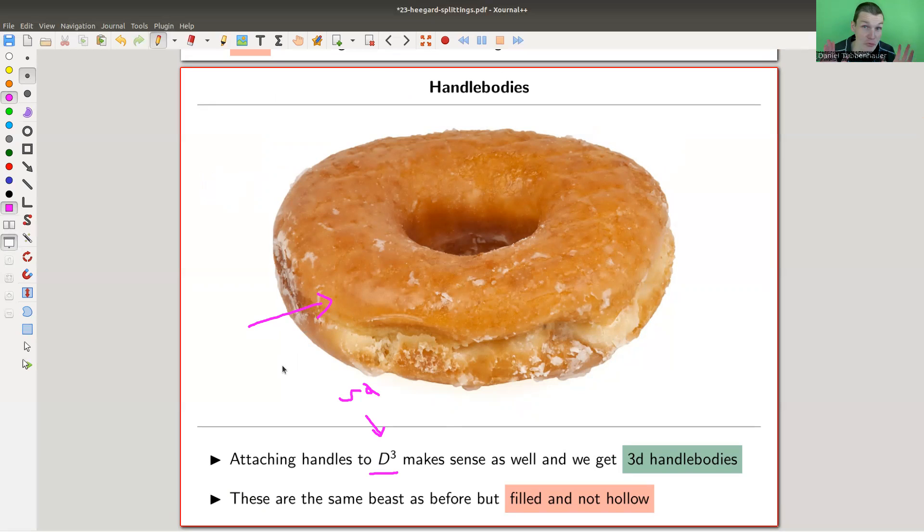So a torus is not a doughnut. A doughnut is not hollow. A torus is hollow. I hope you don't want your doughnuts to be hollow. A doughnut is actually a handle body obtained by attaching a handle to D³. So that's really the difference now. Everything is filled up in this filled up picture. And that's exactly the only difference. These are really the same beasts as before, but filled and not hollow.